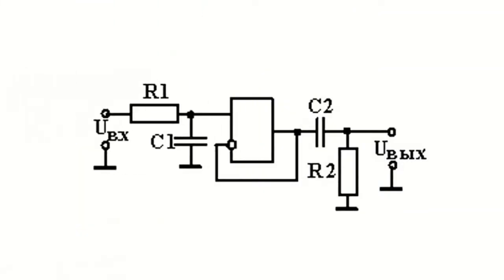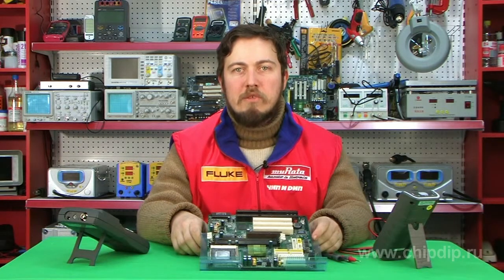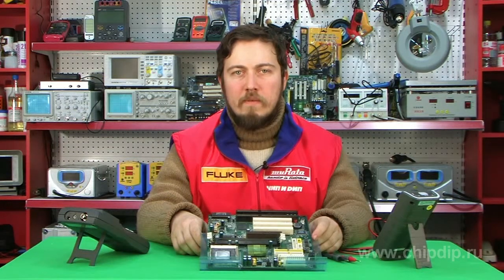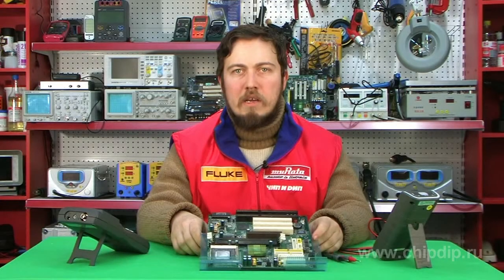The simplest example of the bandpass filter is a circuit of serially connected filters of low and high frequencies. These filters have high operational stability but are quite complex to manufacture. Using an operational amplifier is a simpler approach, and the simplest layout of the bandpass filter is shown in the picture.